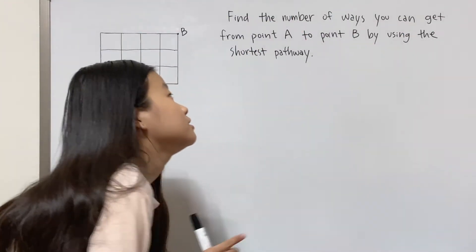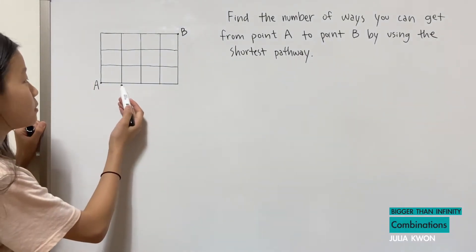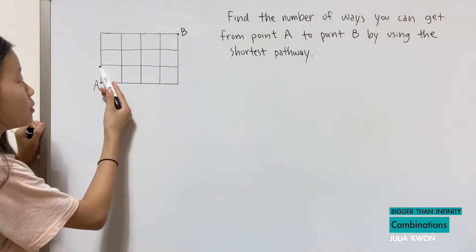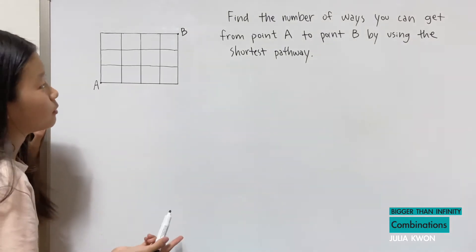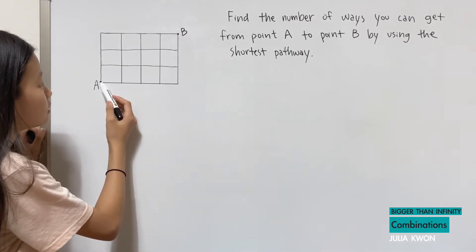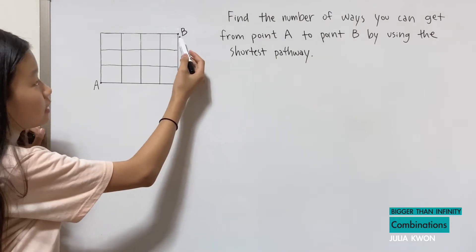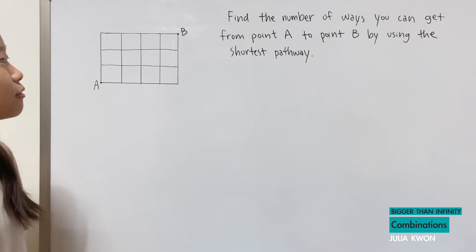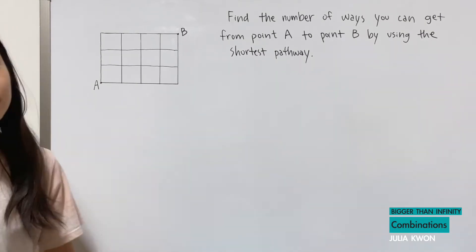When it says 'by using the shortest pathway,' you can't go from point A to a point and then back to a previous point, because that wouldn't be the shortest pathway. An example of a shortest pathway would be going through a sequence of points directly to point B. So how many ways can you get from point A to point B by using the shortest path?